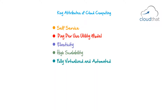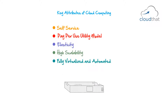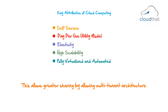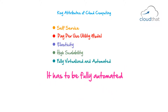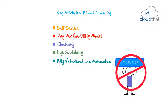Cloud services must be fully virtualized and automated. You don't get access to actual physical resources, but to a virtual appliance on top of them. For example, the storage you get is not physical access to a hard drive — you are getting a virtual layer above it, and the servers provided are virtual instances. This allows greater sharing through a multi-tenant architecture where a single physical server could host virtual servers from two different clients. Provisioning VMs or storage must be fully automated, not a manual task performed by someone at the backend.